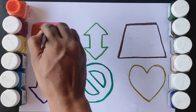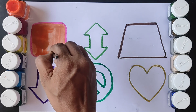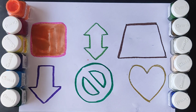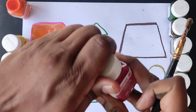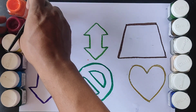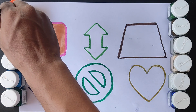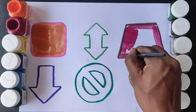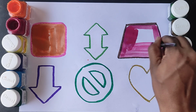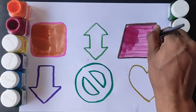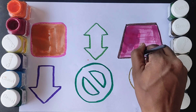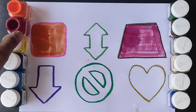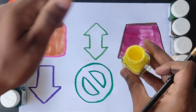Cube shape. Orange color. Magenta color. Trapezoid shapes. Trapezoid shape. And then yellow color.